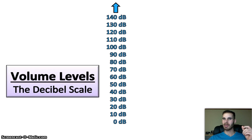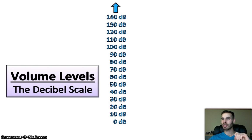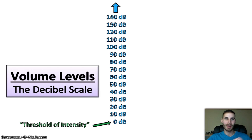First thing we should address is the importance of 0 decibels. Now you'd probably think that 0 decibels means no volume. Interestingly enough, that's not the case. In fact, 0 decibels is actually a very interesting topic that really can have its own lesson attached to it someday. 0 decibels has a name. It's called the threshold of intensity, which makes it sound really cool and epic. And that's because it is cool and epic, just like everything else you study in this class.